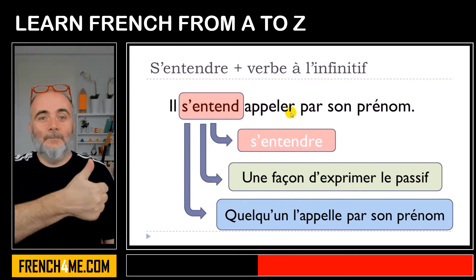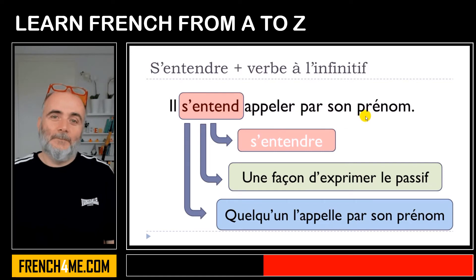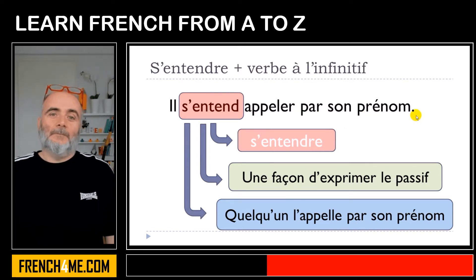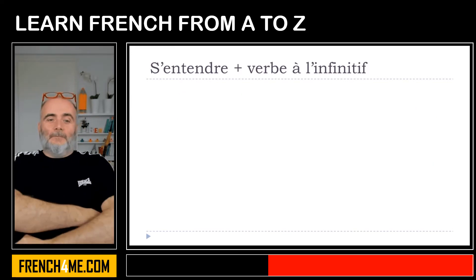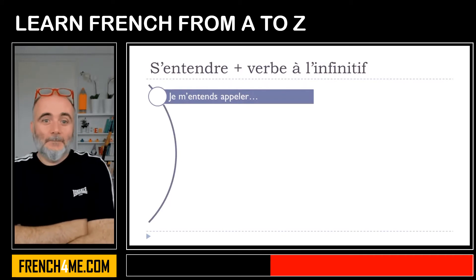So you can use s'entendre and then put the verb at the infinitive form: il s'entend appeler par son prénom. Now let's see how you conjugate that at the present form.